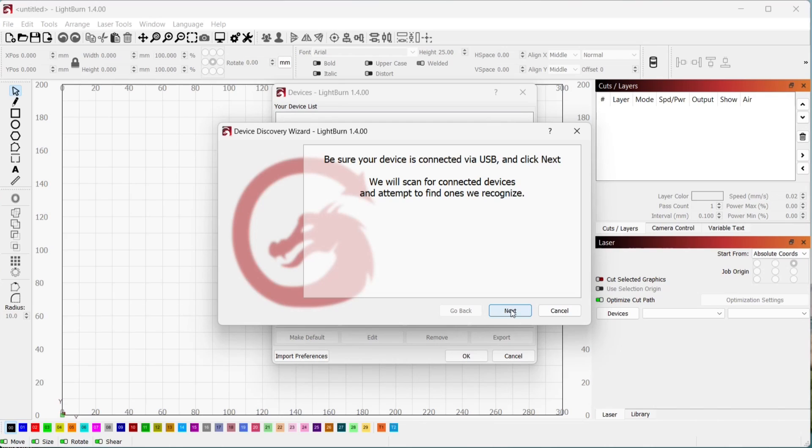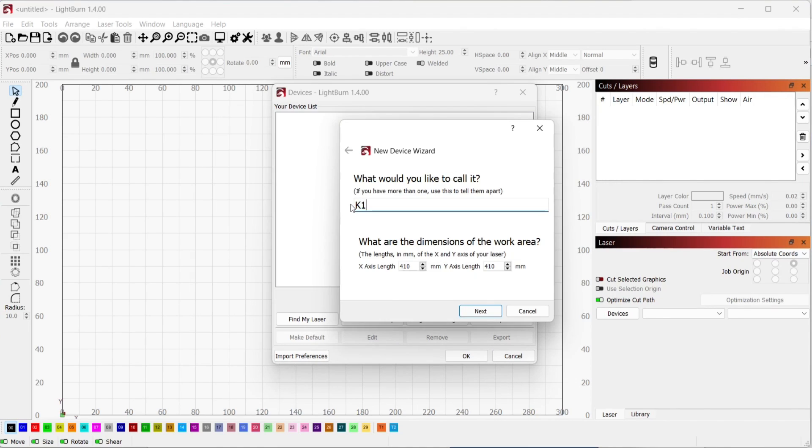To control the K1 I'll be using the very popular Lightburn software. At startup Lightburn prompted me to scan for new devices. After a few seconds it found the K1, I selected the front left as the homing position and disabled auto home on startup.